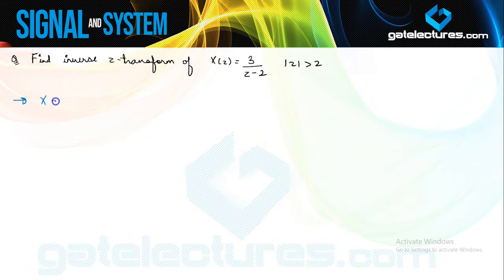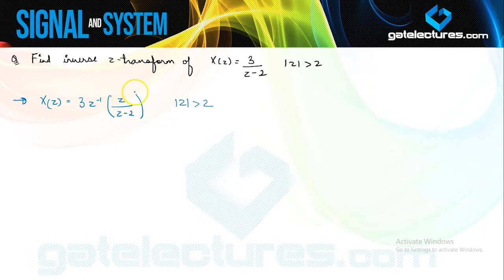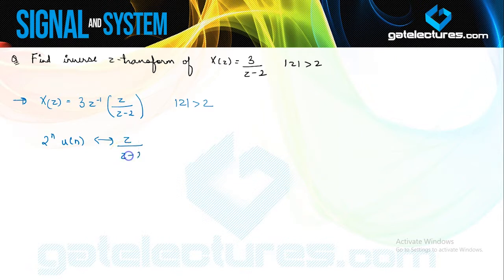Since there is no Z in the numerator, you multiply the numerator and denominator with Z — equivalently multiplying by Z and Z⁻¹. So this becomes 3Z⁻¹ · Z upon (Z − 2). The inverse Z-transform for Z upon (Z − 2) is known: 2^N · U(N). Multiplication by Z⁻¹ in the Z-domain corresponds to a shift of one unit in the time domain, using the time-shifting property.